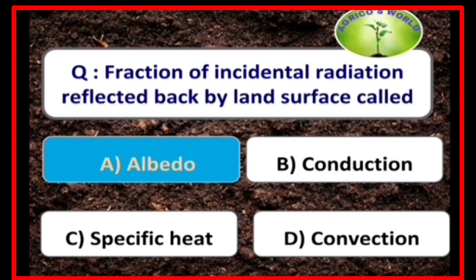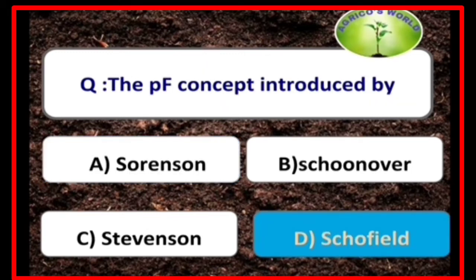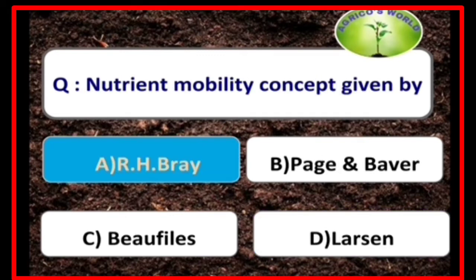Albedo is the fraction of incident radiation reflected back by the land surface. The PF concept was introduced by Schofield. Nutrient mobility concept was given by the scientist R.H. Bray.